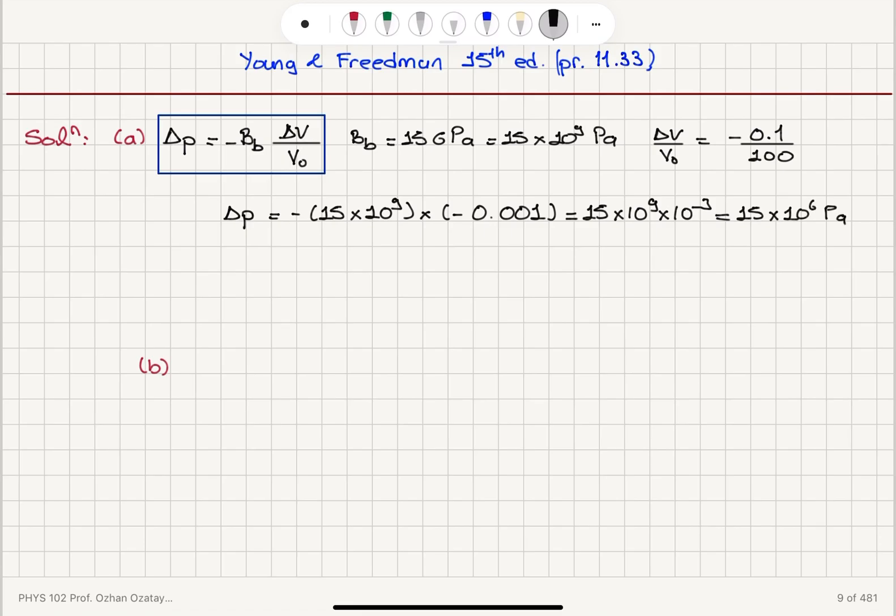Now we have to convert Pascals to atmospheres. Here's one atmosphere pressure is 1.01 times 10 to 5 Pa. So using this conversion, we obtain delta P is equal to 15 times 10 to 6 Pa divided by roughly 10 to 5.